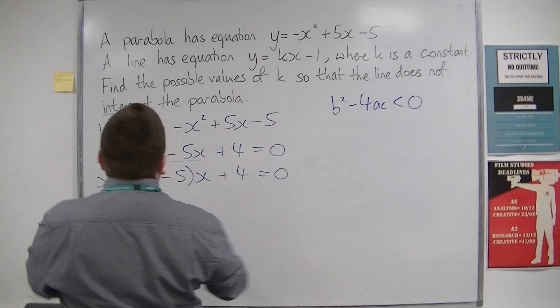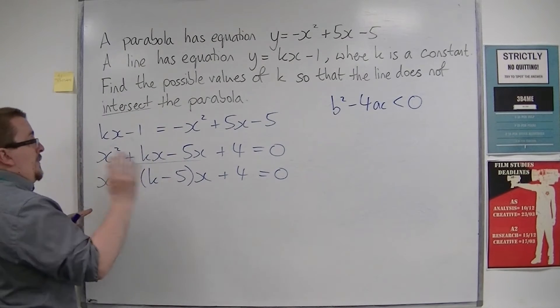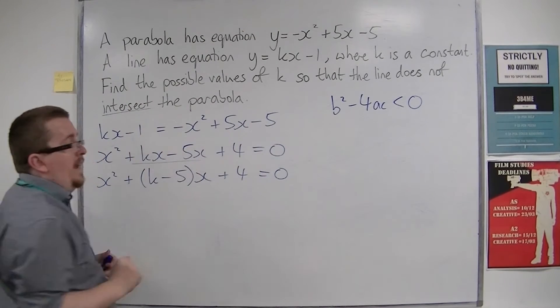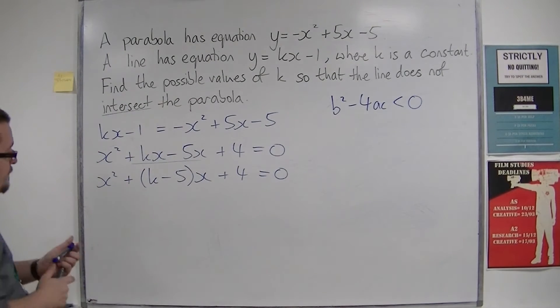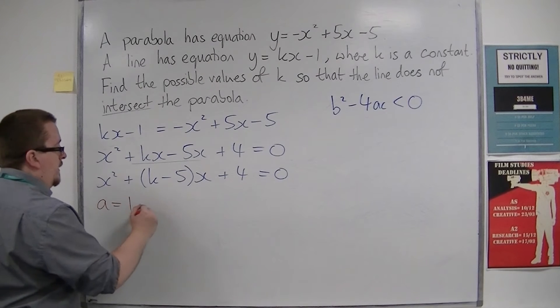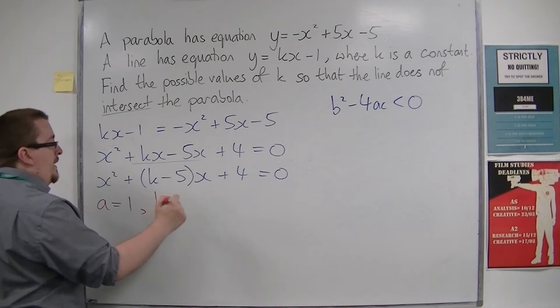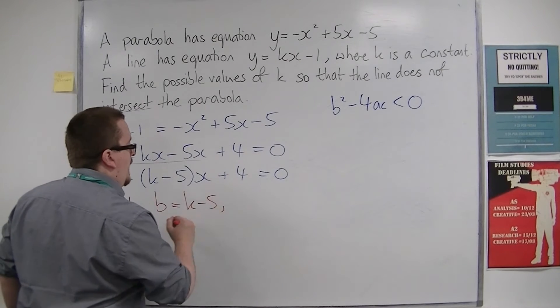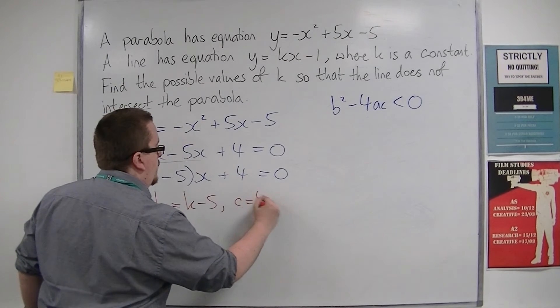So what we're going to do is work out what a, b, and c are and substitute them into our inequality. So a, the coefficient of x squared, is 1. b, the coefficient of x, is k minus 5. And c, whatever is left over, is 4.